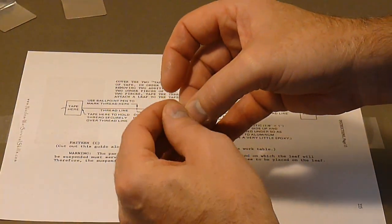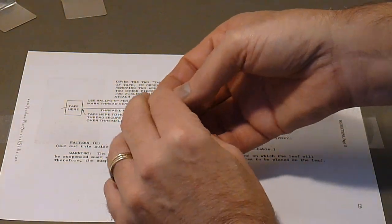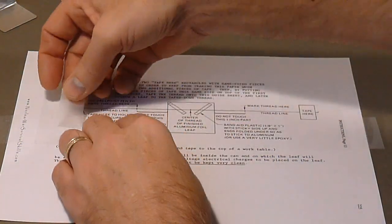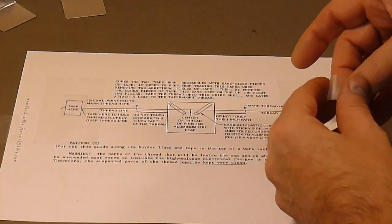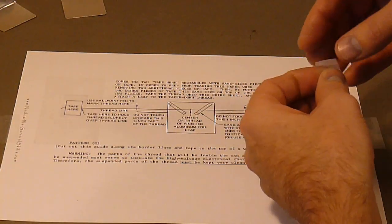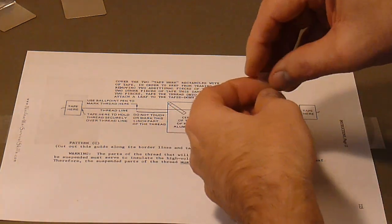Then place a 1-inch long piece of 3/4-inch wide clear tape also over each of the boxes marked 'tape here.' Folding a small amount of the edge will make it easier to pull off later.